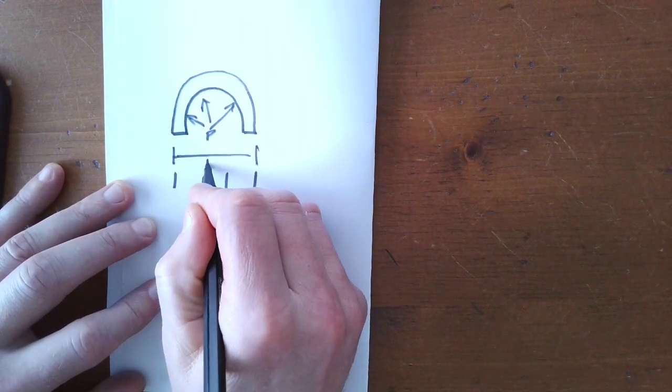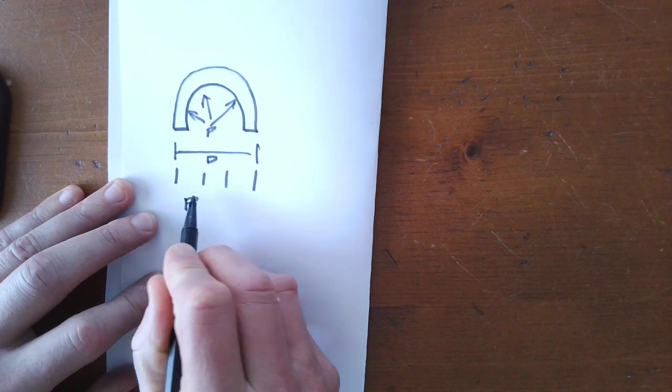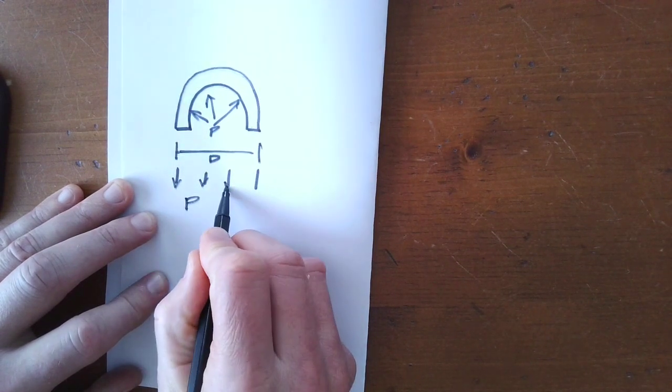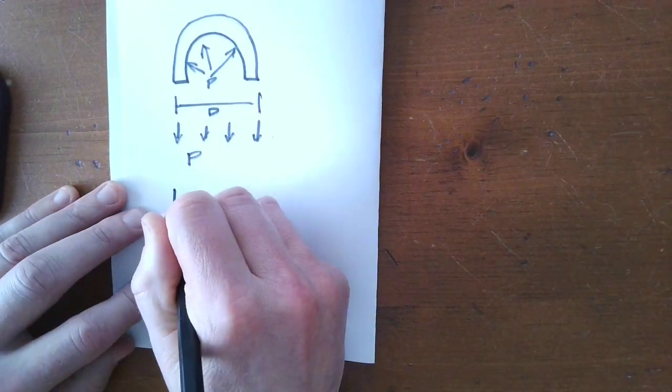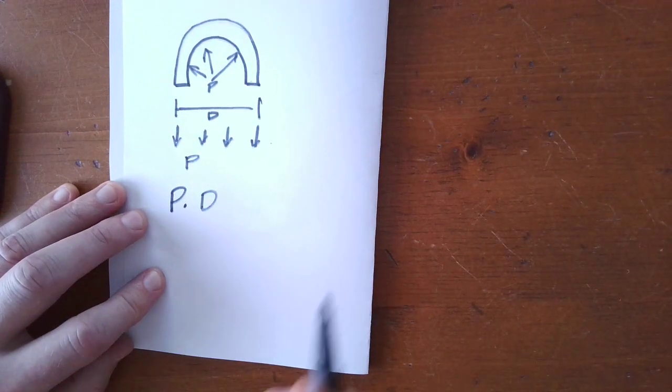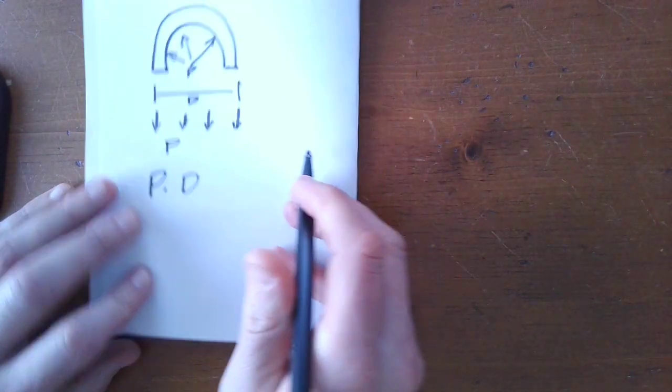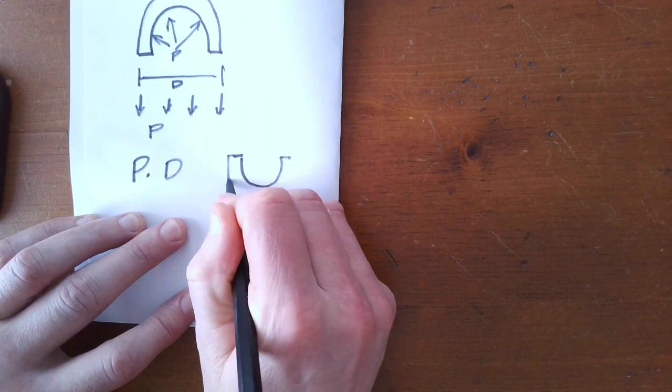So, the distance is the diameter, and the pressure is P. And the pressure on one side of the equation is P times D. So, that's half of the equation. Now, the other half, let's draw the other half here just to give us a little bit more room.